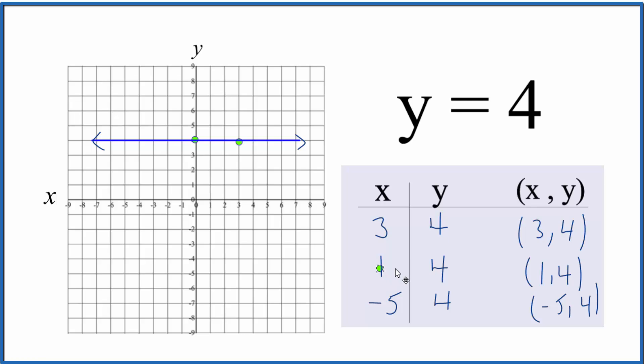If x is 1, y is 4. So we go where x is 1 and y is 4. And finally, we have negative 5 on the x. We go up to 4 on the y. And there's our graph. So that's the graph for the equation y equals 4.